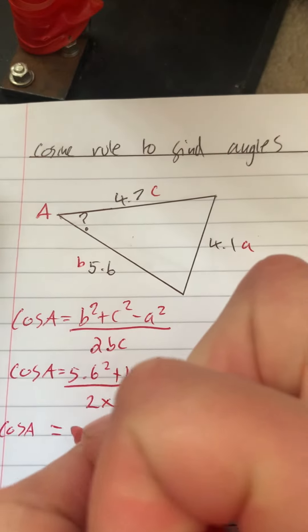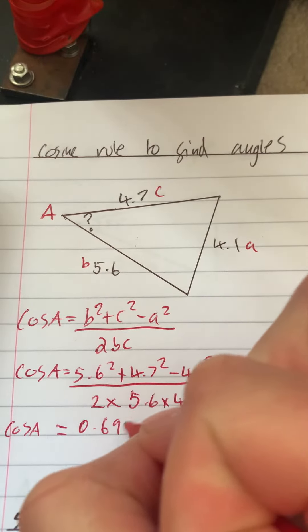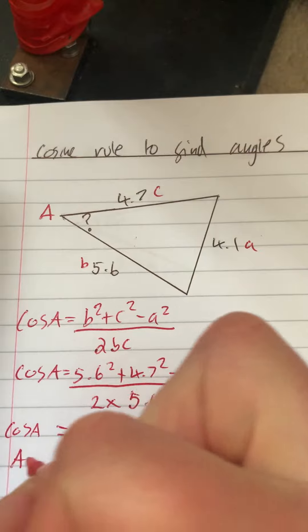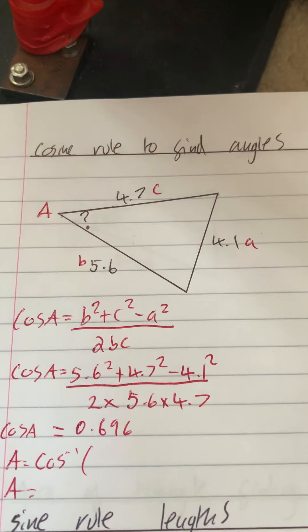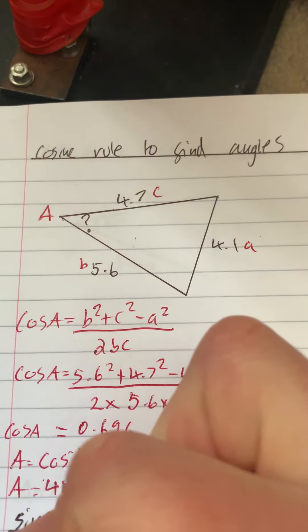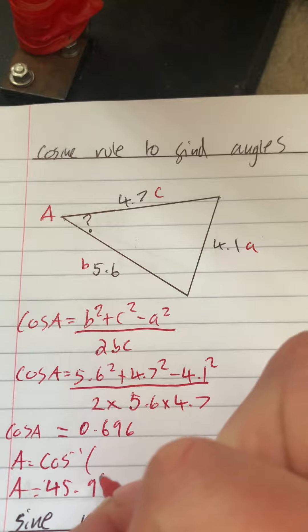We get an answer of 0.696. Now, like before, to get A we're going to have to do cos to the minus 1 of that. When we put that into our calculator, we just use the answer from before, cos to the minus 1 of our answer, we get 45.9 degrees.